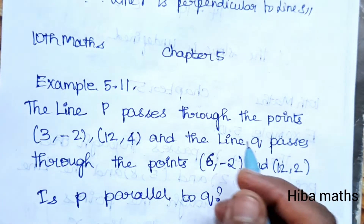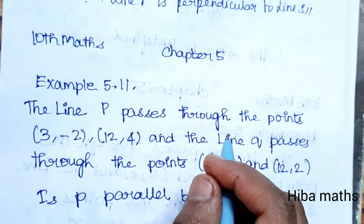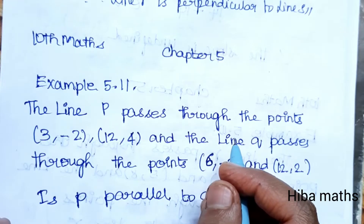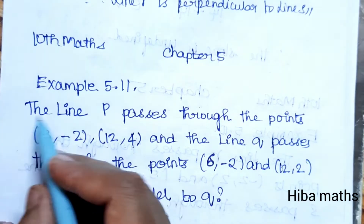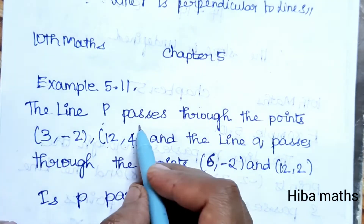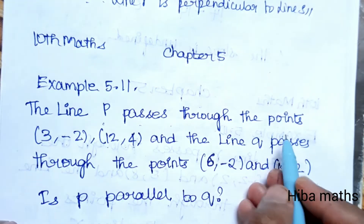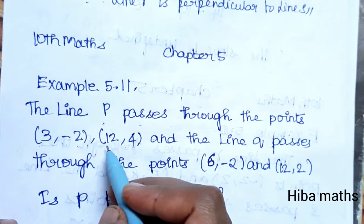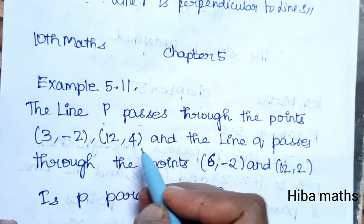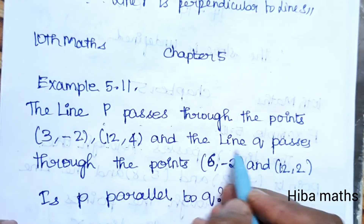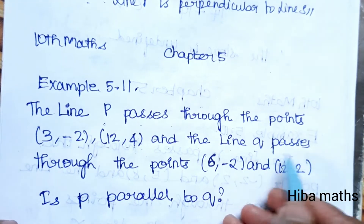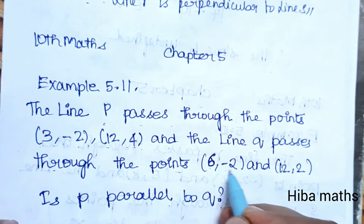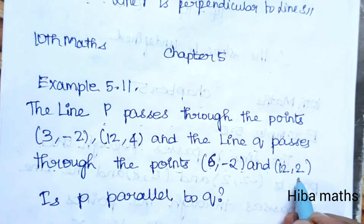Hello students, welcome to HIPAA Max 10th Standard Math, Chapter 5, Example 5.11. The line P passes through the points (3, -2) and (12, 4), and the line Q passes through the points (6, -2) and (12, 2).